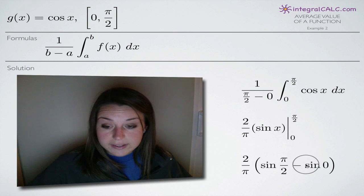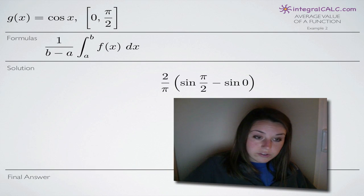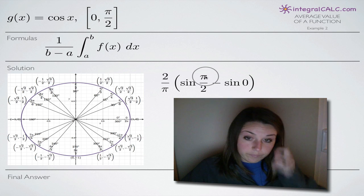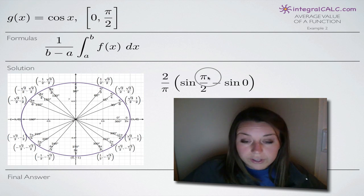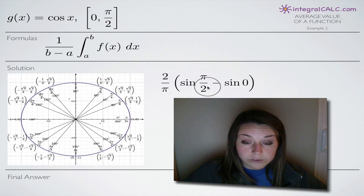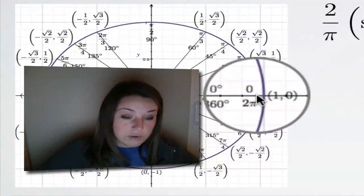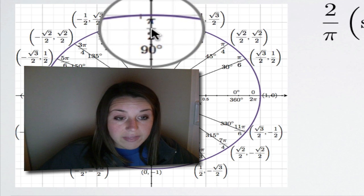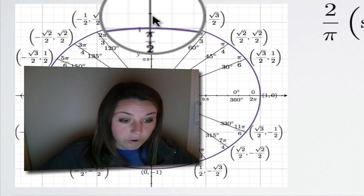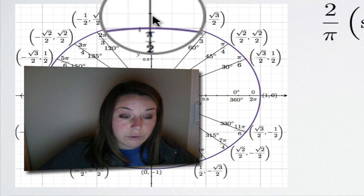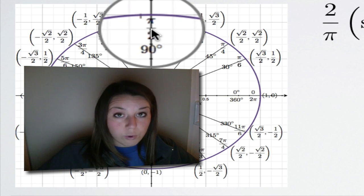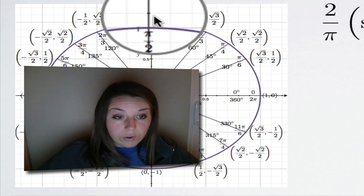In order to evaluate sine of pi over two and sine of zero, we need to use the unit circle. Looking for sine of pi over two, we go to the unit circle and find the place where the angle equals pi over two — it's at the point (0, 1), where x equals zero and y equals one. Because we're looking for sine of this angle, we look at the y-coordinate, which is positive one.